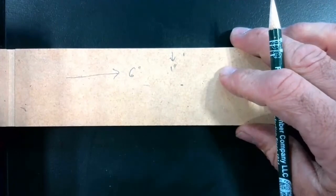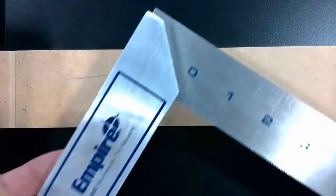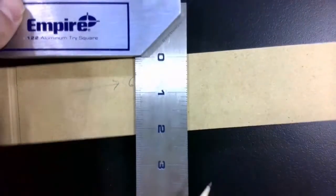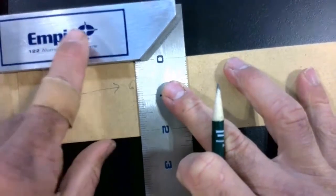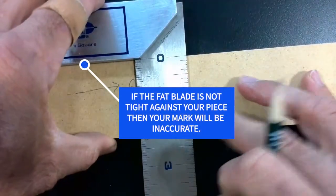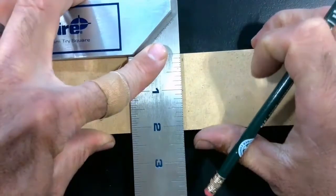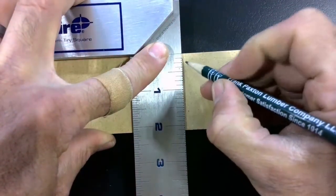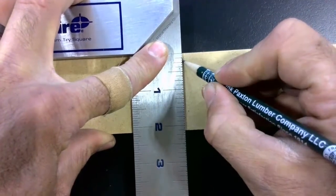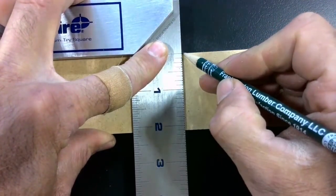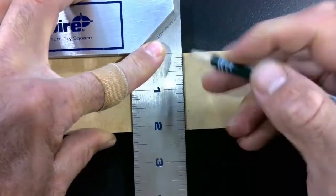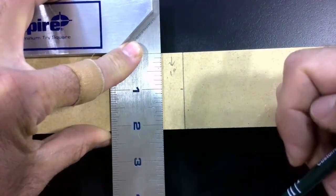Now, accuracy and precision is really important in woodworking, so I'm going to take my tri square, and holding the fat part of the blade tight with my workpiece, I'm going to slide it until the edge of the blade lines up with my six inch mark. And now I can draw a line all the way across my workpiece at six inches.